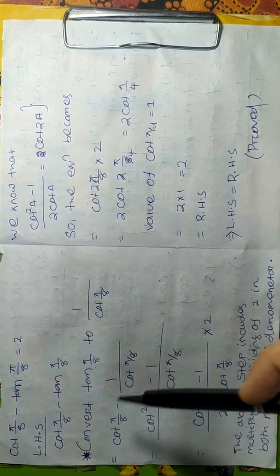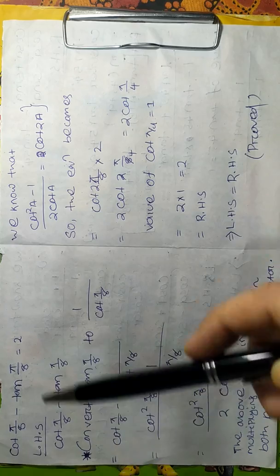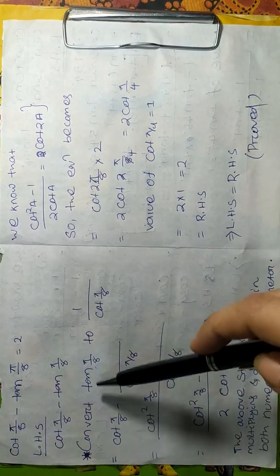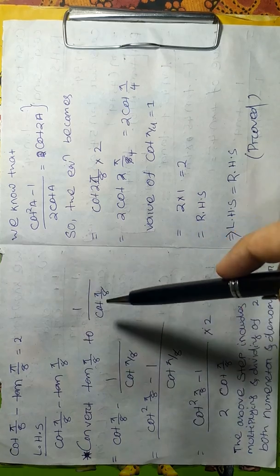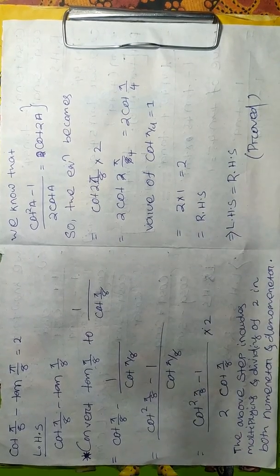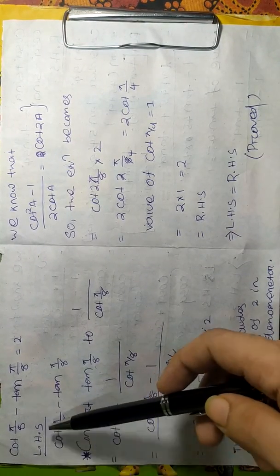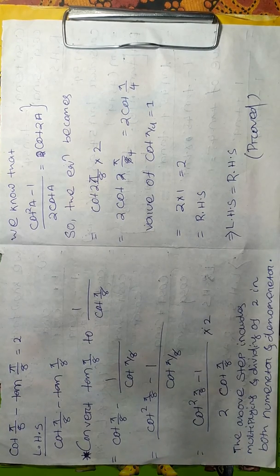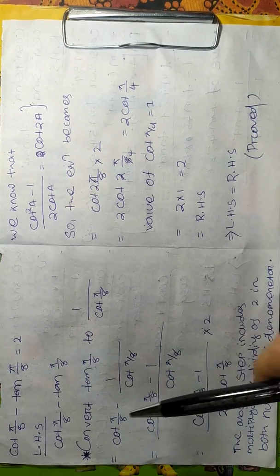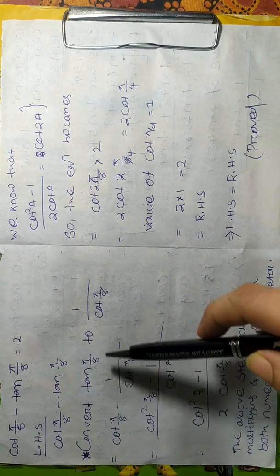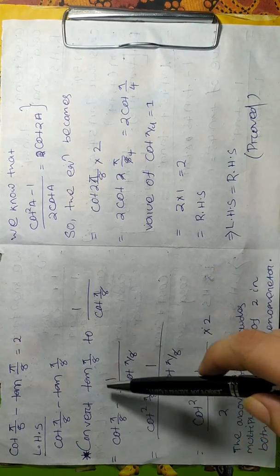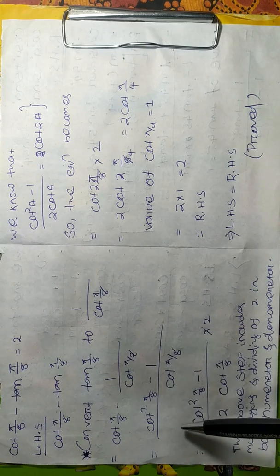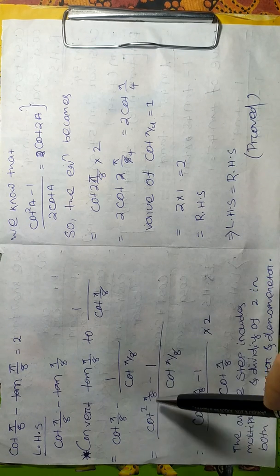To prove this problem, we take the LHS as cot(π/8) minus tan(π/8). The next step is the conversion of tan(π/8) to 1 divided by cot(π/8). Then we get cot(π/8) minus 1 by cot(π/8), and we take the LCM, which gives cot²(π/8) minus 1, all over cot(π/8).